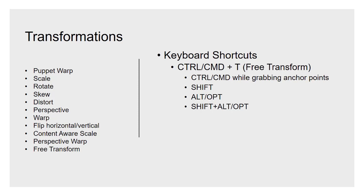Once you've used the keyboard shortcut to enter Free Transform mode on your object, you'll see a bounding box with control points or anchors on the corners and the middle. If you press and hold Control or Command while hovering over those anchor points, your cursor will turn white and you can grab those anchor points and move them independently of each other, allowing for some perspective warping.